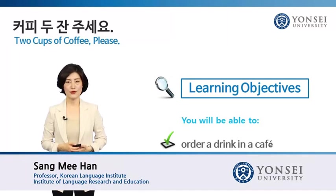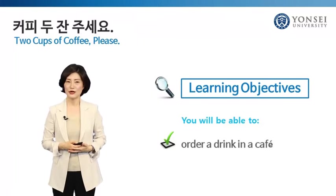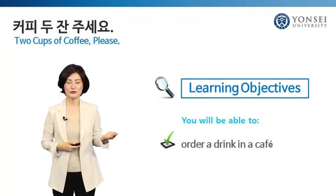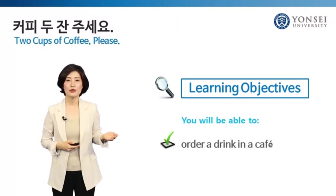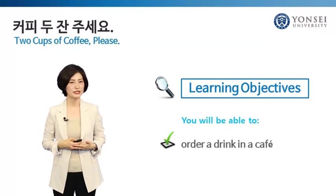안녕하세요. Hello, everyone. Last time, we studied how to order food in a restaurant in Korean. Now, I'm sure you can say 여기요, 비빔밥 하나 주세요 when you want to have 비빔밥 in a Korean restaurant. In this unit, we will look at ordering drinks in a cafe and study related vocabulary, expressions, and counting units in particular.